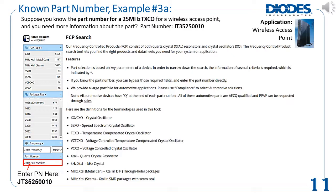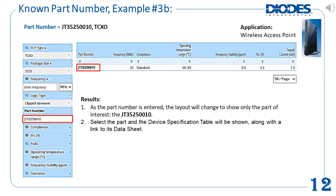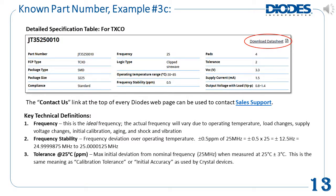Suppose you know the part number and just want more information about the part. The FCP search tool can be used to easily locate the device specification and its datasheet. For example, suppose you need information on a TCXO part number JT35250010 that's used for a wireless access point. Enter the number into the part number field at the bottom of the specification column on the left. As the part number is entered, the layout will change to show just the part of interest, the JT35250010. Select the part and the device specification table will be shown. The link to download the datasheet is in the upper right corner. To request samples or additional information, a link to sales support is found at the top of every Diodes webpage under Contact Us.